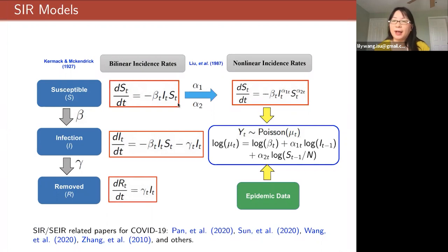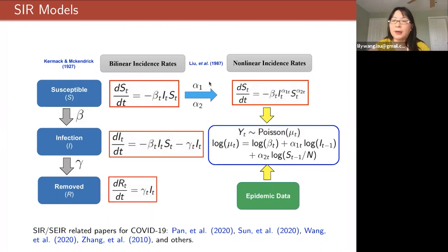For example, given strict social distancing or self-quarantine, the number of effective contacts between infected individuals and susceptible individuals may decrease at a high effective level, so the incidence rate will not be the same — it may be smaller than the linear rate. Based on these reasons, we consider some non-linear incidence rates. We consider an even more general case compared with the original SIR model, introducing two parameters r1 and r2 which help capture the non-linear incidence rate.